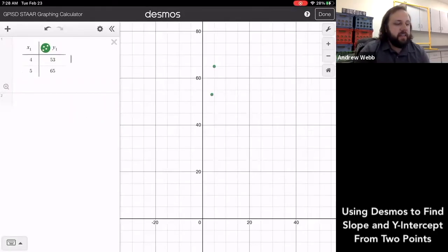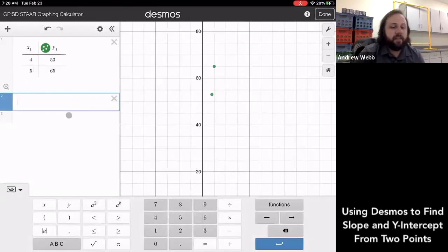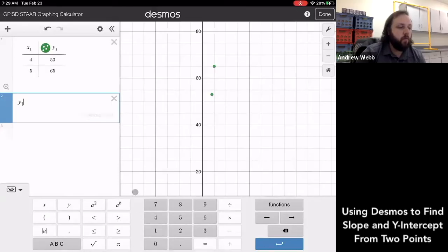Now what I need to do is I need to tell Desmos to make this into a line. So what I'm going to do is I'm going to type in this formula that looks very similar to our slope intercept form. So we are going to type in Y one, cause I want it to talk about this Y, these Y values.